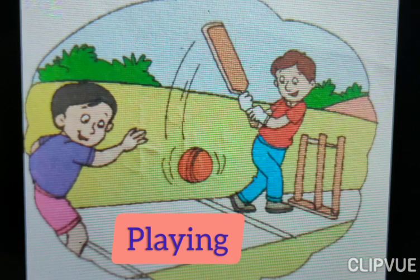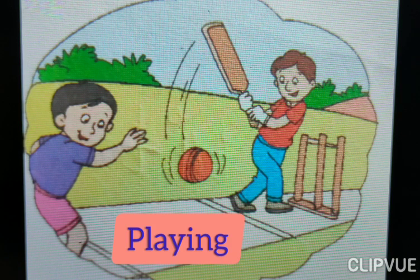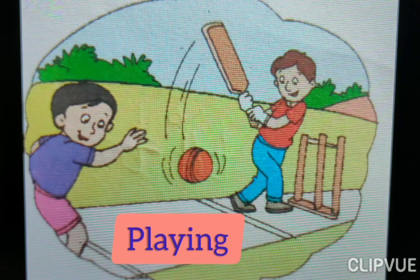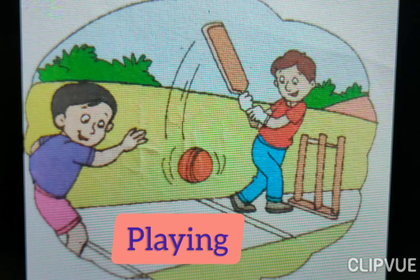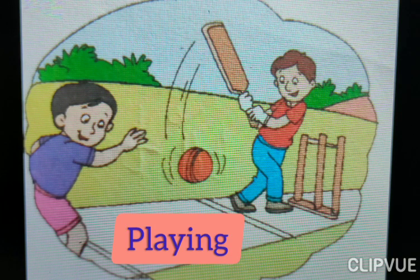Look at here everyone — what do they do? They are playing. Both boys are playing here. And here playing is action word. What is the spelling of playing? P-L-A-Y-I-N-G. Playing. Playing is action word.